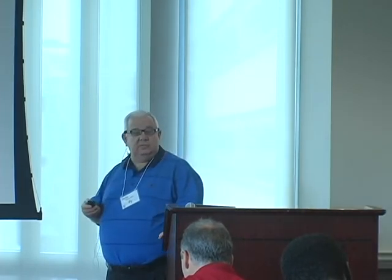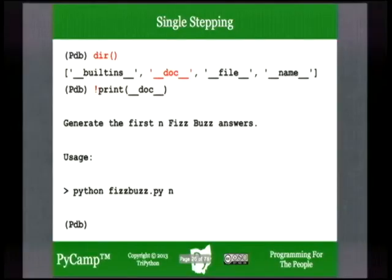If you accidentally step into a function you don't want to step all the way through, 'r' means return — do all that stuff and return. I developed this in Python 3 and didn't have the 'from __future__ import print_function' statement; Python 2 was a bit of an afterthought. Sorry to throw you off a little bit — that happens in tutorials.